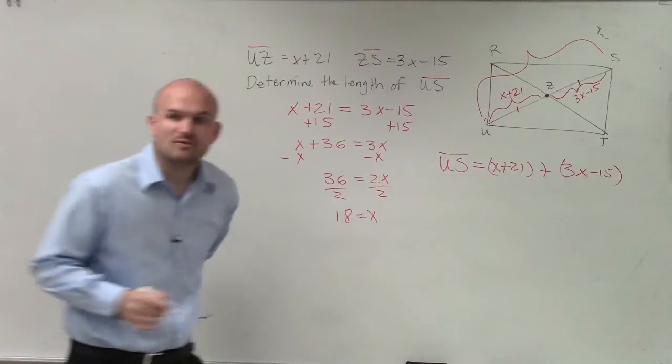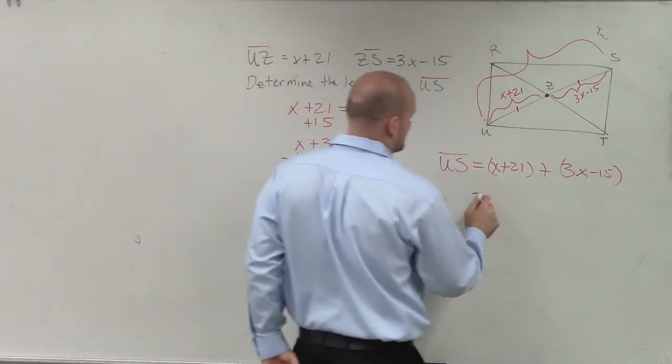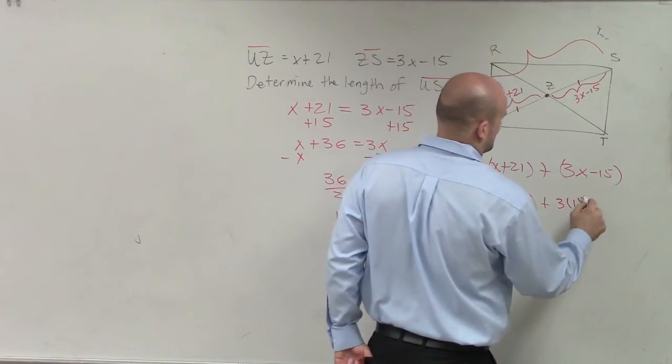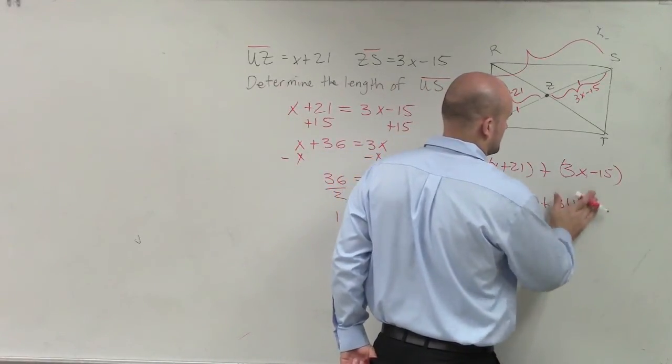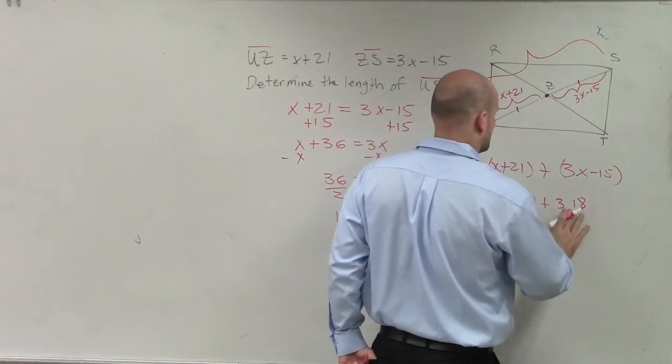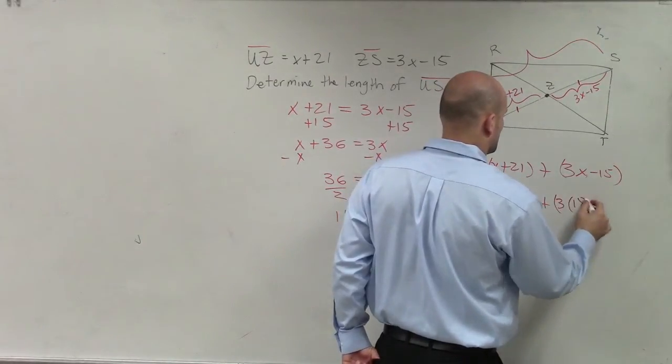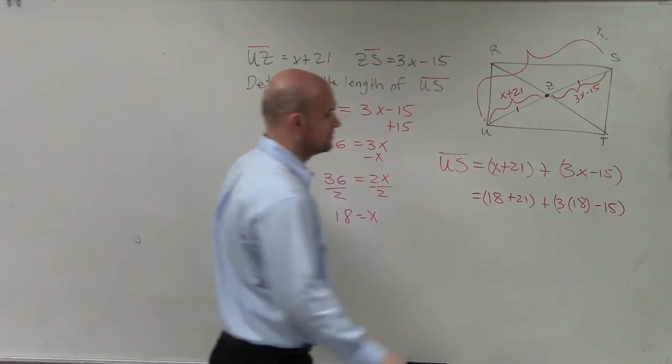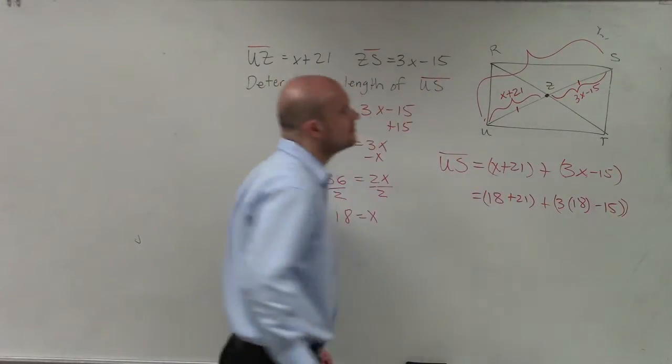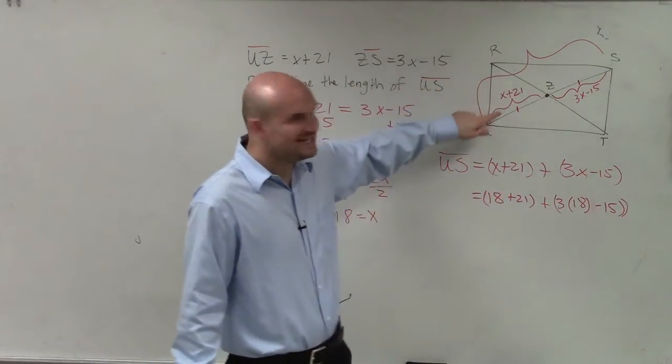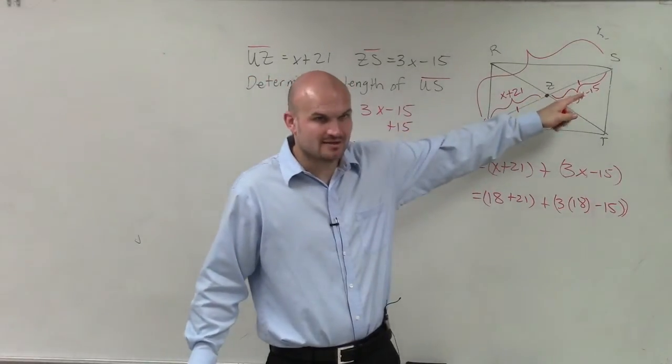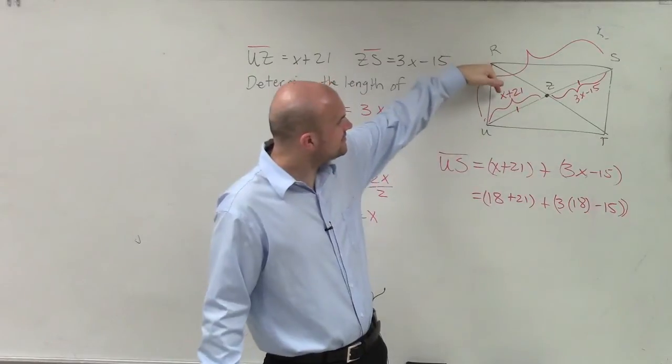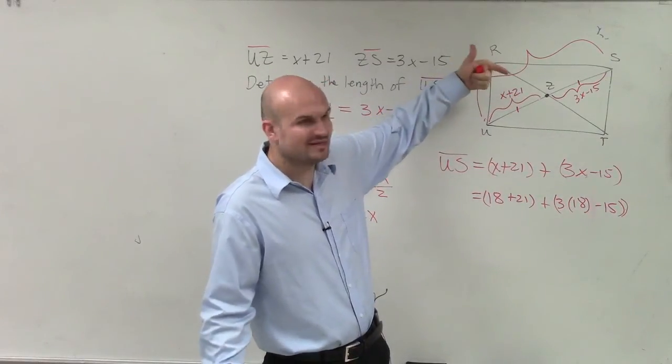And now we know that x is equal to 18. Remember, 18 is not the length of the whole side. 18 is the length of x. So the length of this side, well, actually we don't even need to do all this.